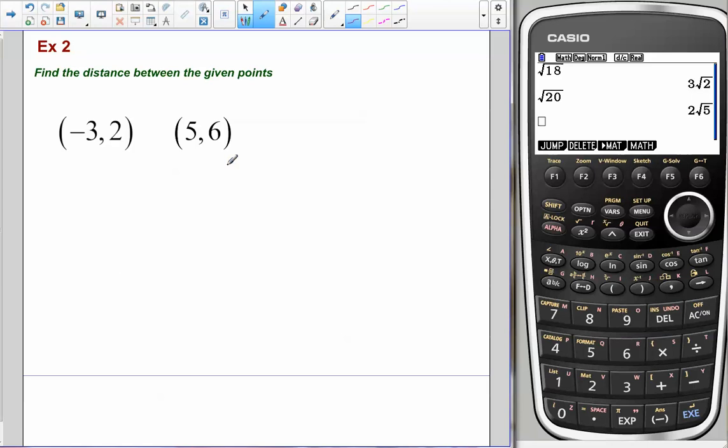Here is our final example. Find the distance given the two points. This is how fast you can really do the distance formula. Because remember, it's just delta x squared plus delta y squared, all under the square root symbol.